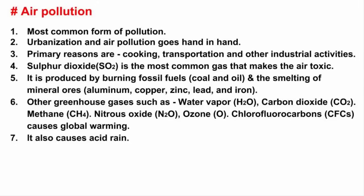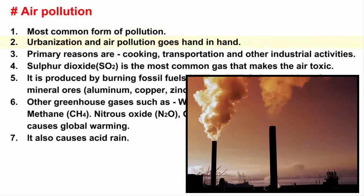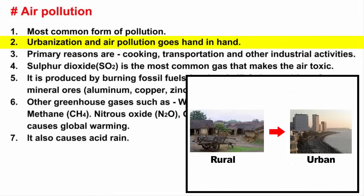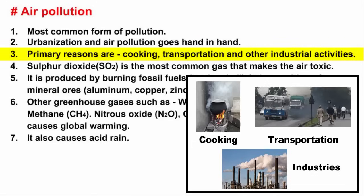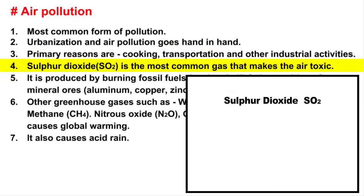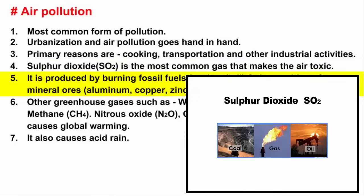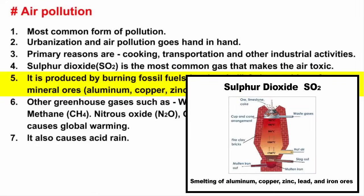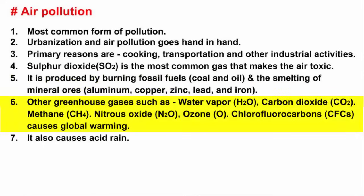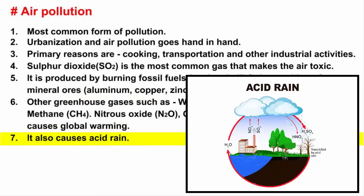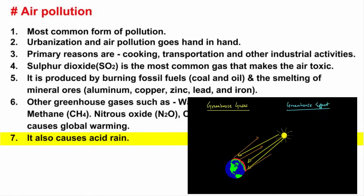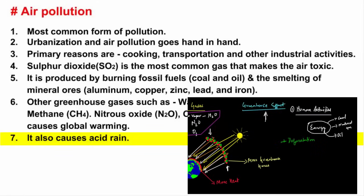The first one is air pollution. It is the most common and dangerous form of pollution. As society moves towards urbanization, air pollution increases — therefore, urbanization and air pollution go hand in hand. Excessive fuel combustion from cooking, transportation, and other industrial activities is the primary reason behind air pollution. Sulfur dioxide is the most common gas making the air toxic. It is produced from the burning of fossil fuels like coal and oil, and the smelting of mineral ores like aluminum, copper, zinc, lead, and iron. The release of sulfur dioxide and other greenhouse gases into the air causes global warming and has the capacity to cause acid rain.